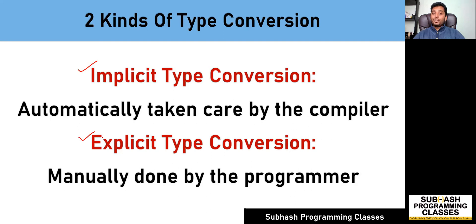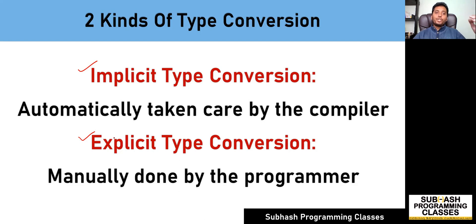In implicit type conversion, the type conversion is automatically carried out by the compiler. Whereas in explicit type conversion, the type conversion has to be done by the programmer manually using a typecast operator. I'll show you a few examples so that you understand the difference between implicit and explicit type conversion, and how these concepts will actually work. So let's move on to see a few examples.